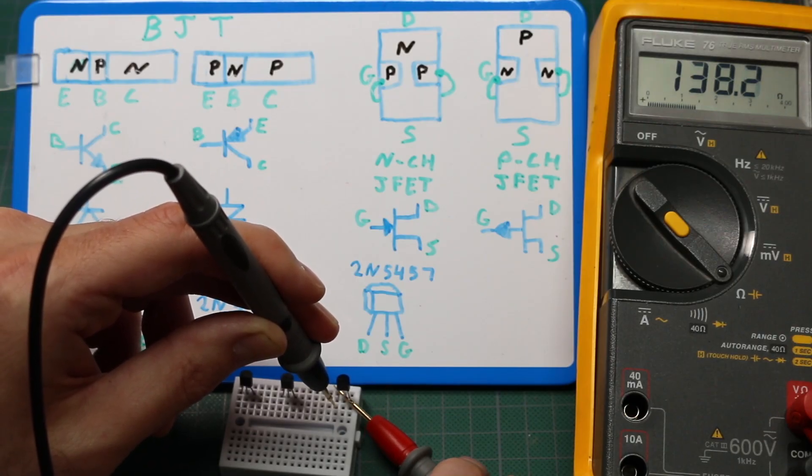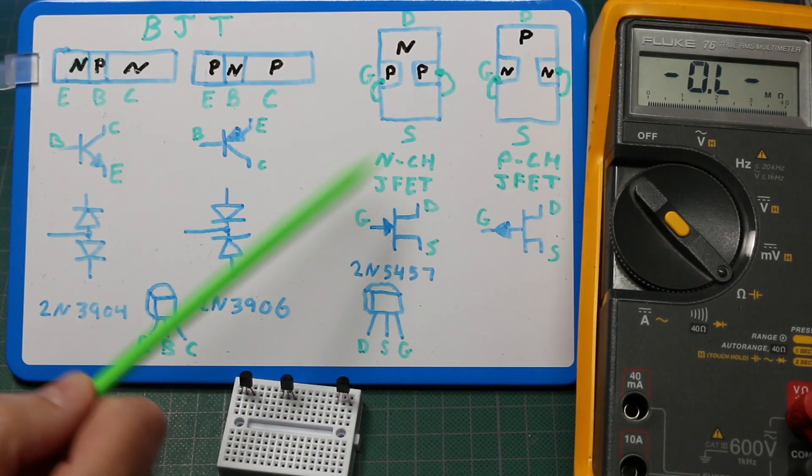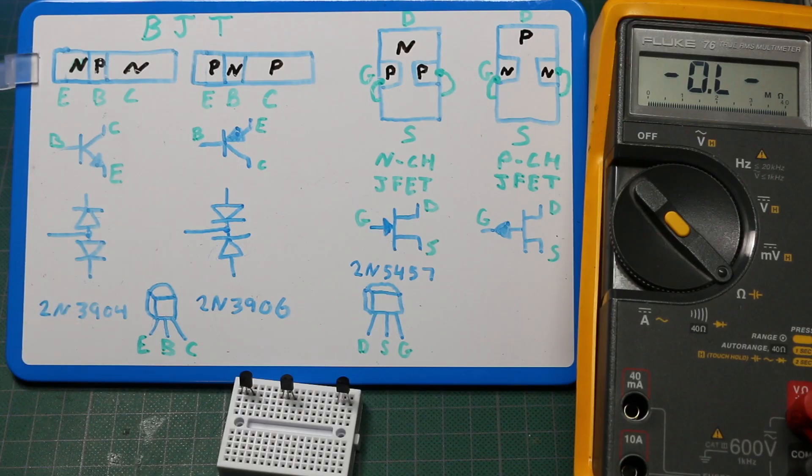So if we go back to shorting the gate to the source to open the channel, we have a solid 138 ohms. So this JFET seems to be in good operating order.